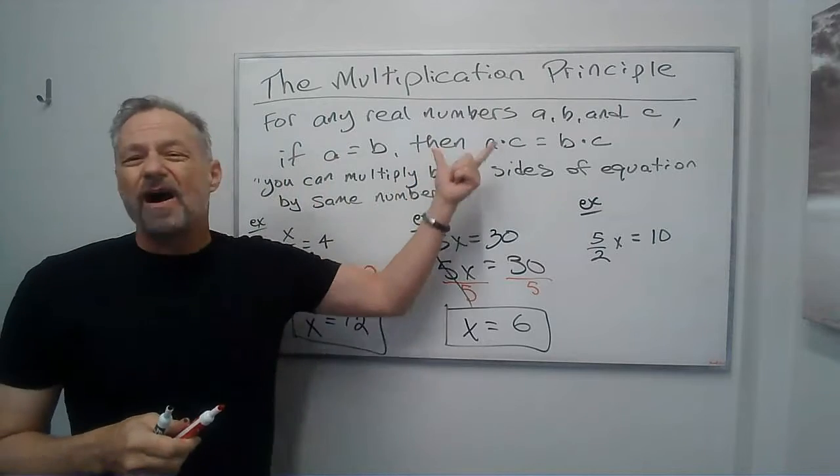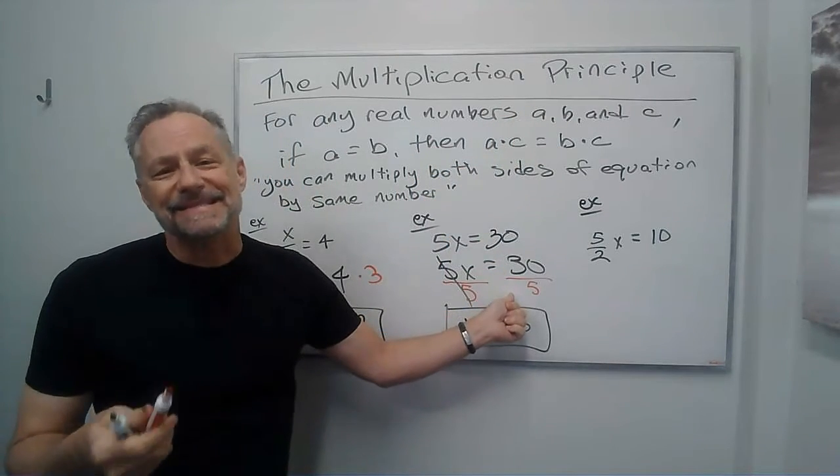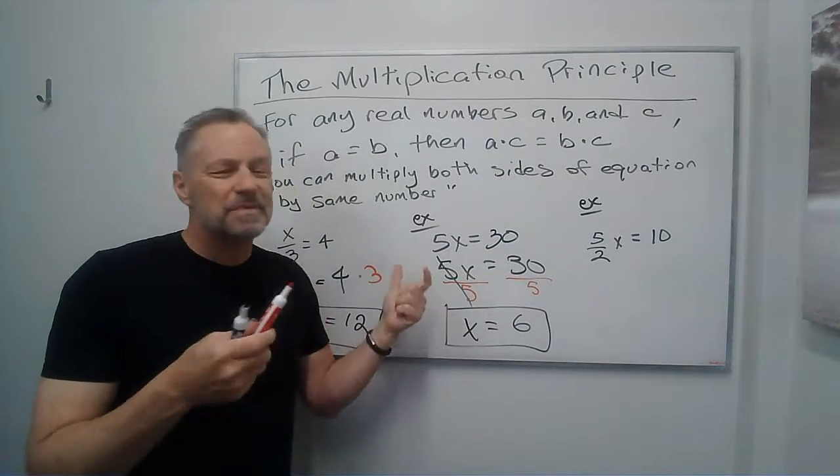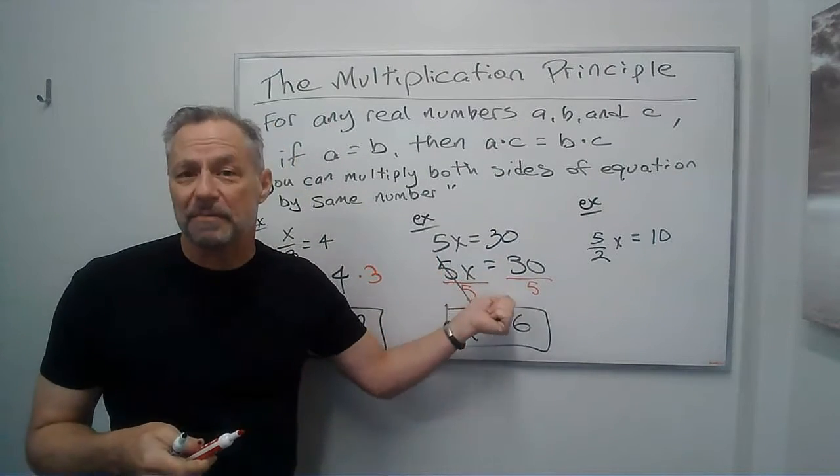All right. Now, obviously, this property works. I can't divide both sides by 0. It would be undefined. In math, we don't say, oh, undefined equals undefined. We just wouldn't divide by 0.